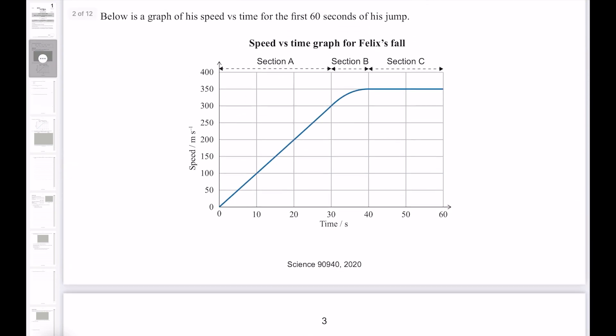The graph we have here is a speed-time graph. As we can see in section A, his speed is increasing at a steady rate from 0 to 300. That means we have constant acceleration.